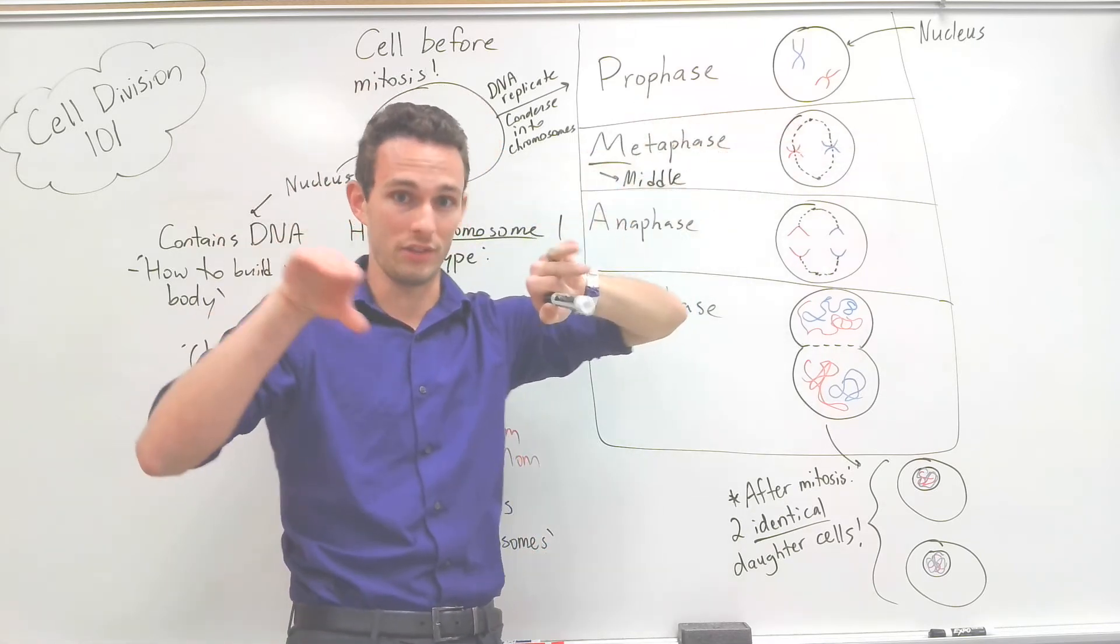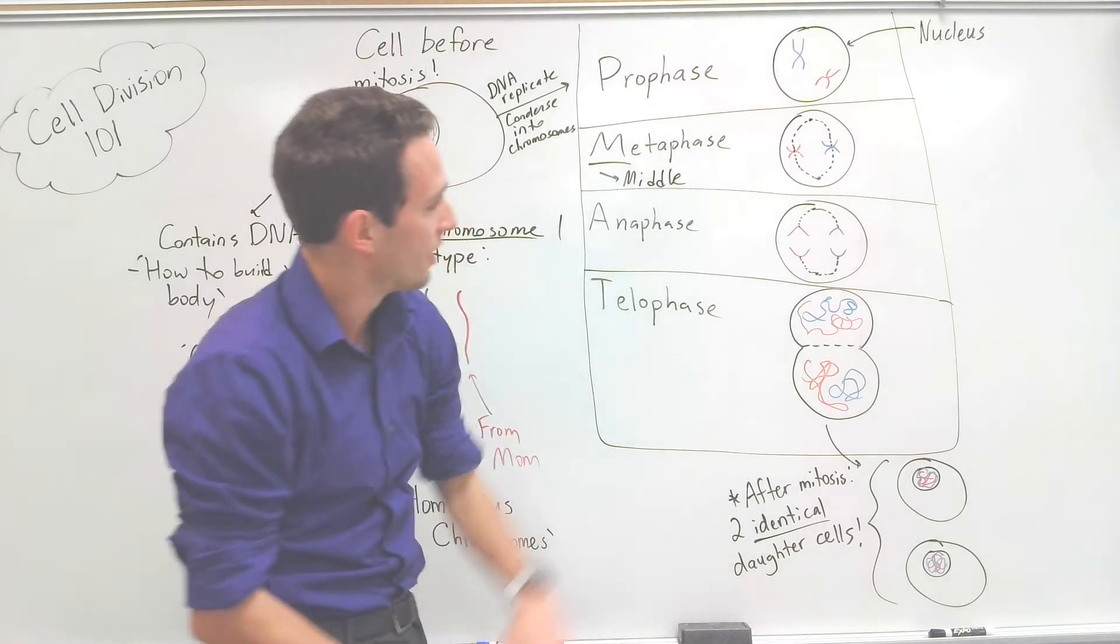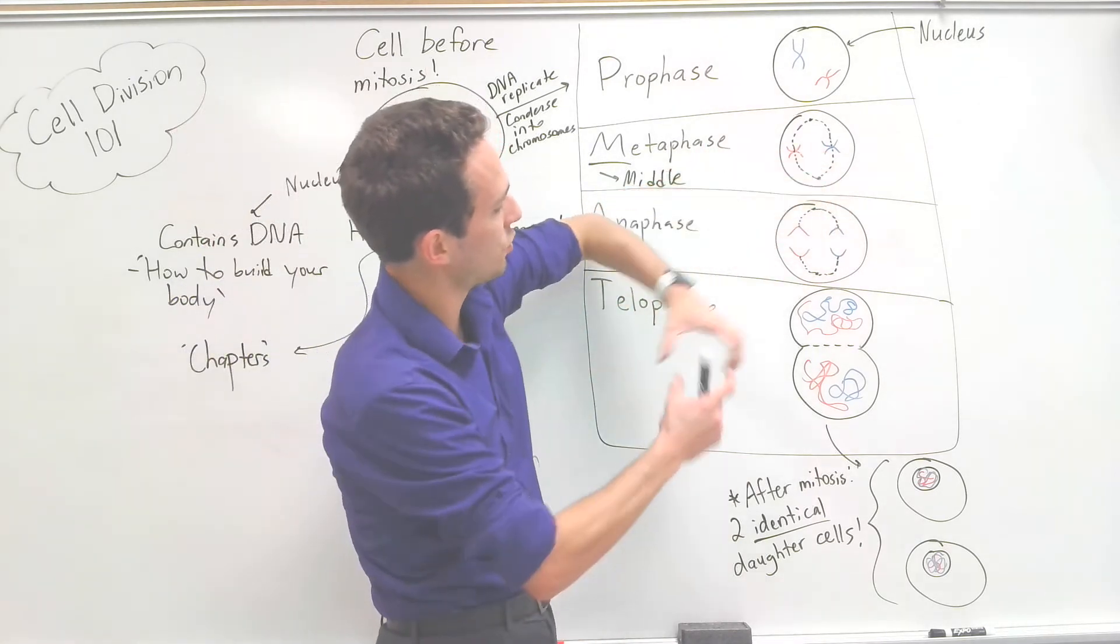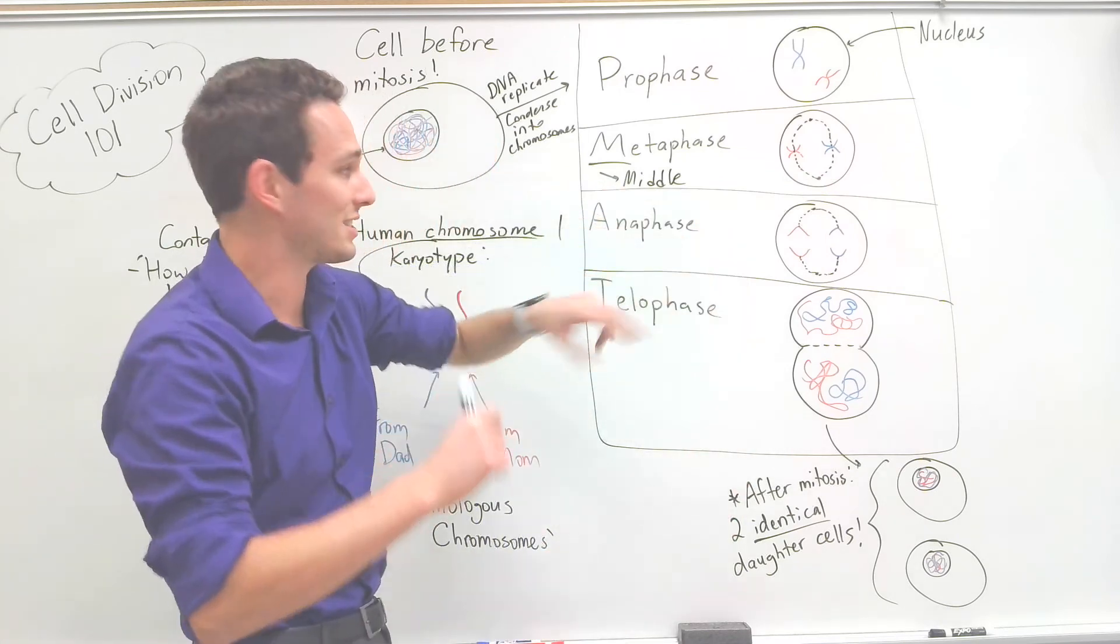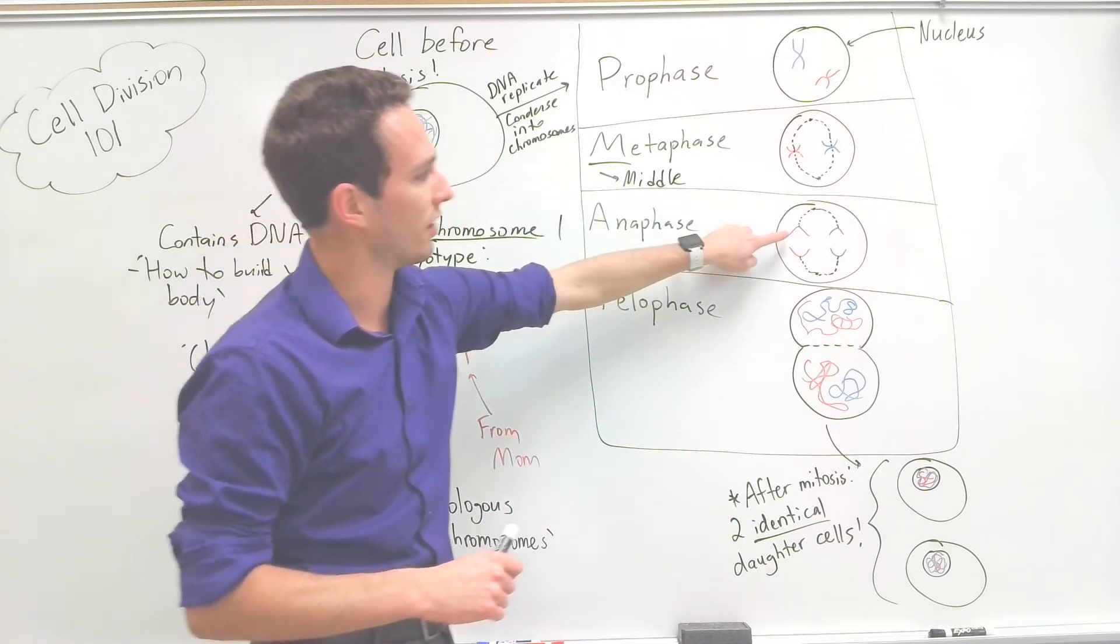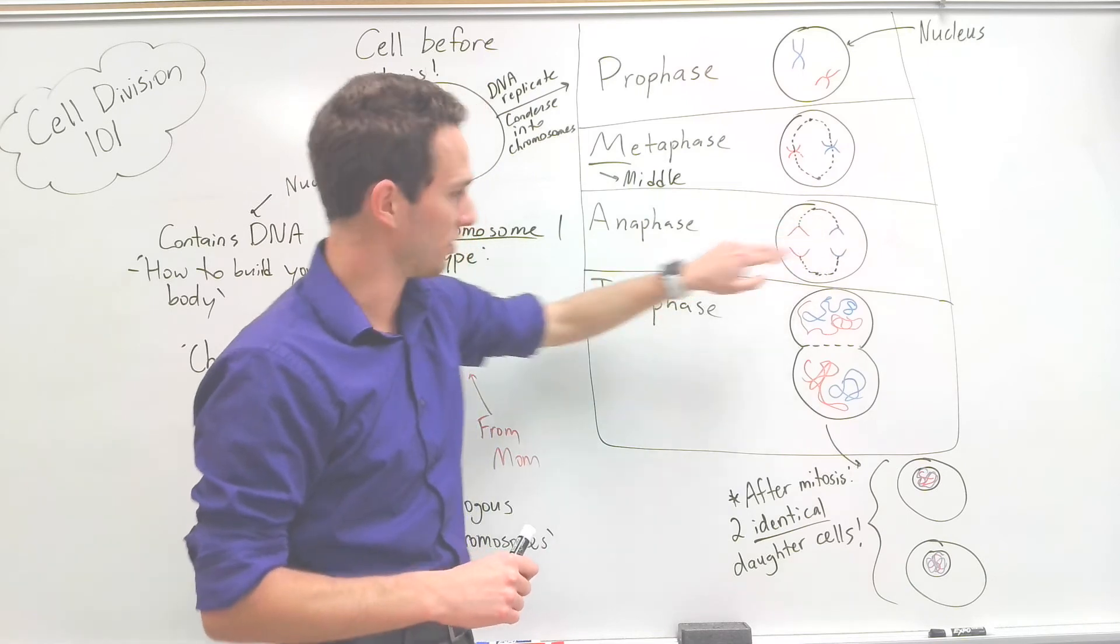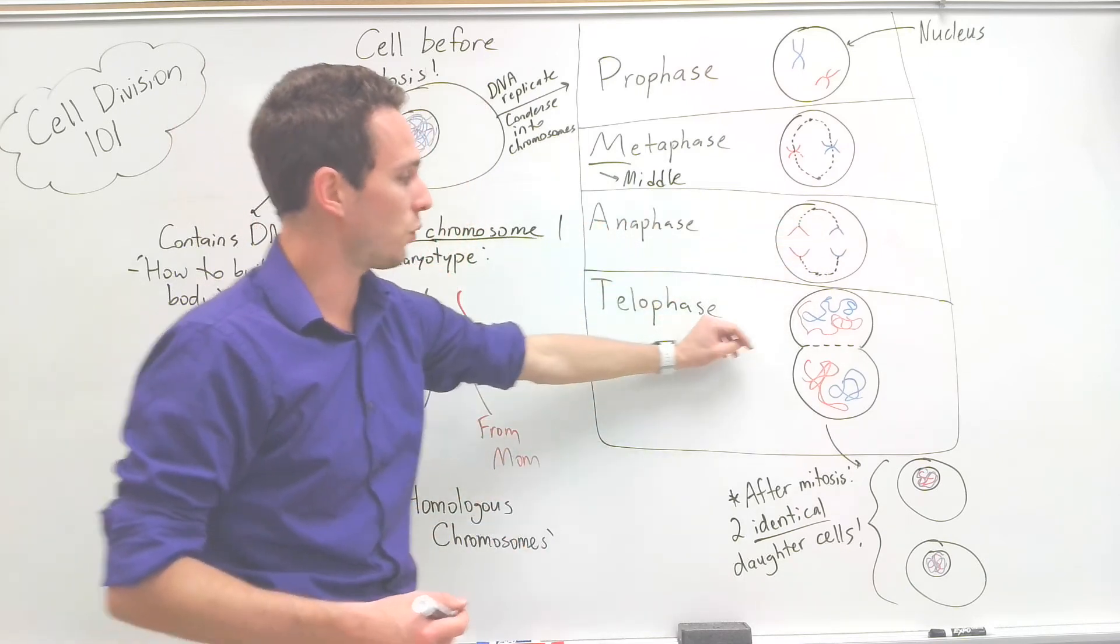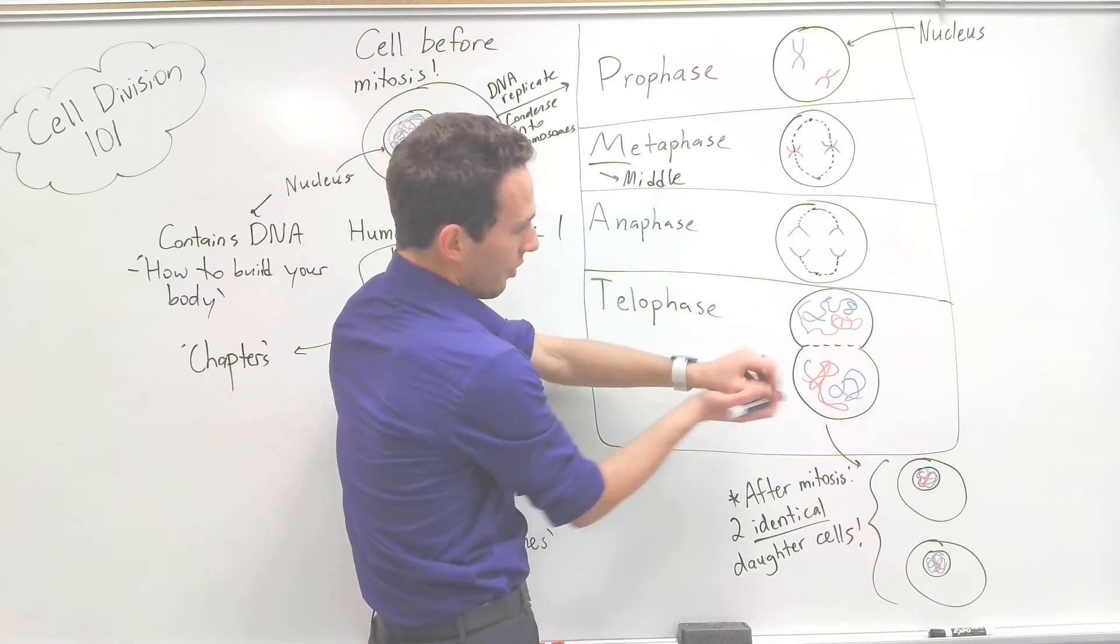Like the equatorial plate, they align the middle. Right after that, the spindle fibers are going to start pulling them to opposite ends of the cell. Once they separate, it's considered anaphase. It kind of looks like two letters of A there. This is how I remember anaphase.